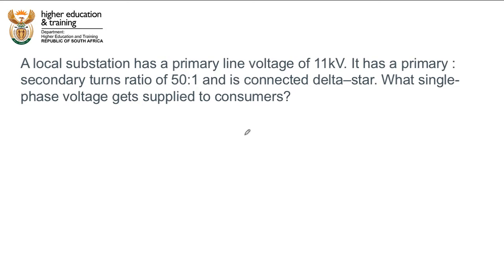Let's go through this question together. A local substation has a primary line voltage of 11 kilovolts. It has a primary to secondary turns ratio of 50 to 1 and is connected delta-star.